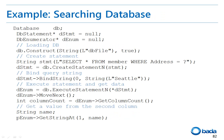This example searches for a specific row in the database. Construct the database with the database name and create the statement to search for data. Bind the keyword string to be searched for and execute the statement. You get an enumerator and can get the number of found columns by calling getColumnCount, then retrieve the data using the getStringAt function.